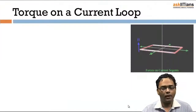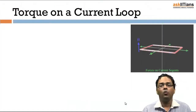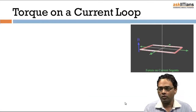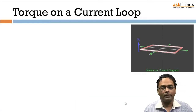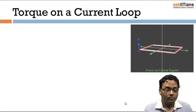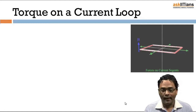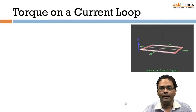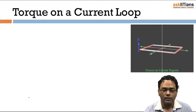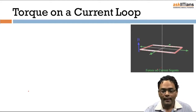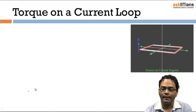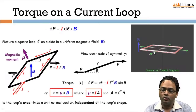We have understood when exactly the force acts on two parallel current-carrying wires. Now supposing we have a current-carrying wire and we want to rotate it — what exactly is the amount of force that is going to be exerted on it? That is what we are trying to find out here: the torque on a current-carrying loop.